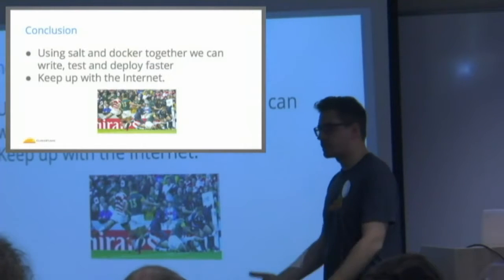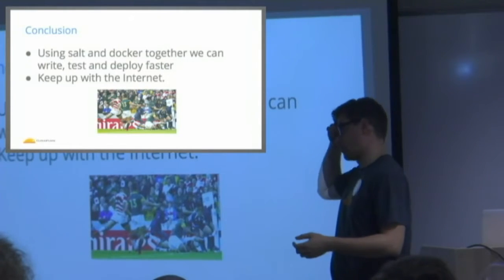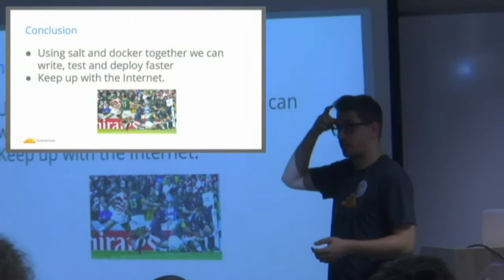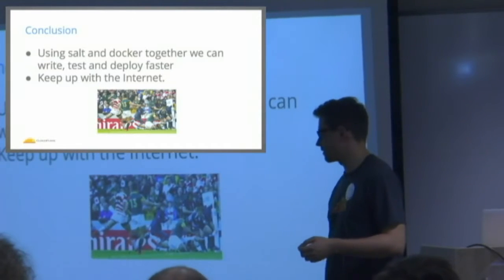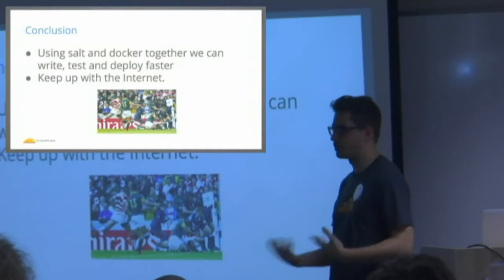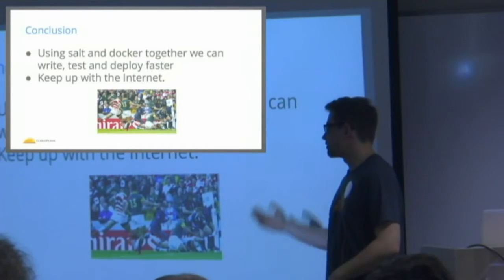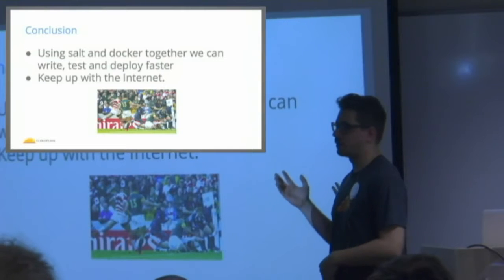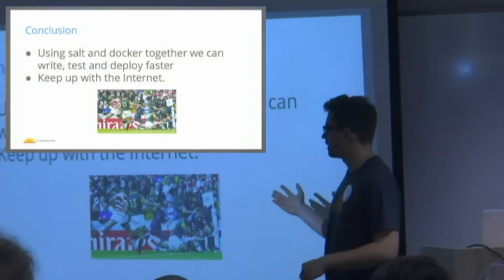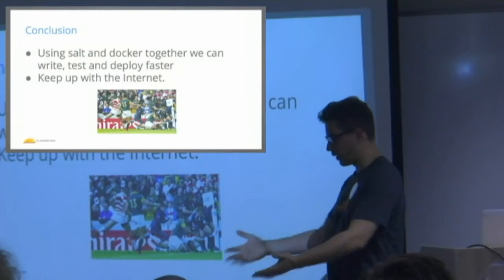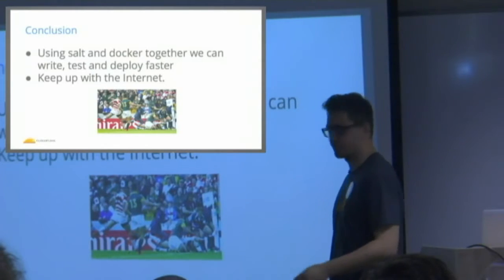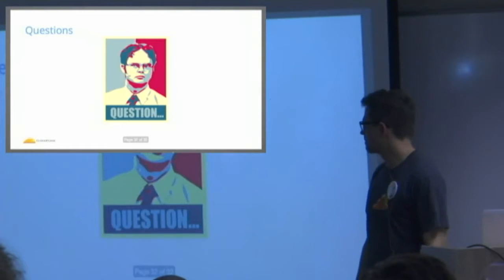So the conclusion is with Salt and Docker together, we're able to write and test out our code much faster than I think we were ever before. We might be able to keep up with the internet because it's very important, it's super important to be able to have confidence in your production environment or your testing environment and in your deploying environment that it's safe. Any questions?